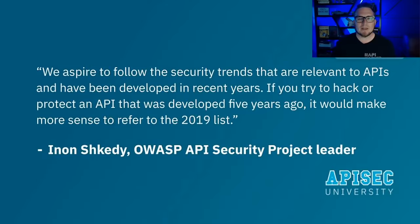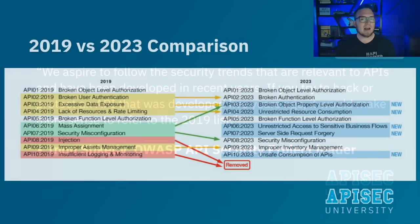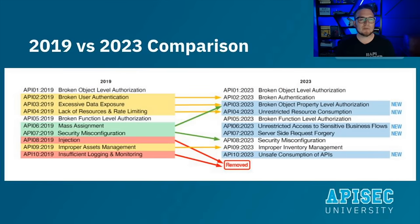OWASP API security project leader Inon Shkedi stated that the 2023 version is different from the 2019 version, aspiring to follow security trends relevant to APIs in recent years. At a high level, comparing the top 10 from 2019 to 2023: two previous risks were removed from the list, three remained exactly the same, four were updated, and five of the 2023 entries are new.